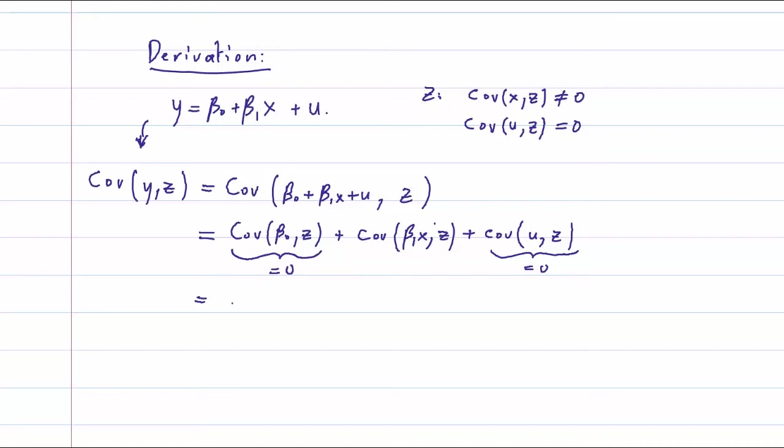So we just have covariance beta one x comma z. And I can take the beta one out. So again, that's a rule concerning the covariance. And this covariance is different from zero.